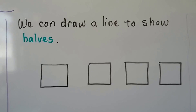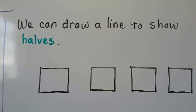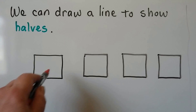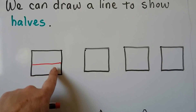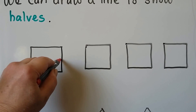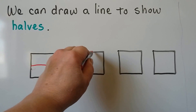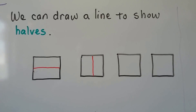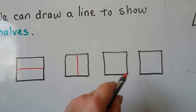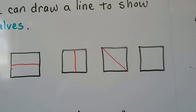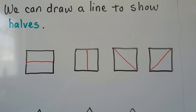We can draw a line to show halves. We have some squares here and there are many different ways that we can separate a square into halves. We can draw a line going from side to side and that would cut it in half. We can also go vertically up and down and cut the square into two equal shares — two halves. We could also go from a vertex to a vertex, or in the other direction from one vertex to another vertex, and those are halves of a square.